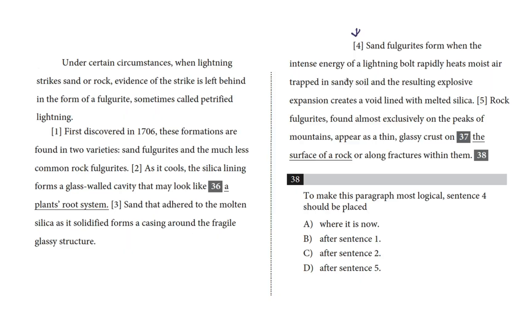Let me read the passage so we can get some context. And as we go, I'm going to circle pronouns and any kind of transition words or phrases. Under certain circumstances, when lightning strikes sand or rock, evidence of the strike is left behind in the form of a fulgurite, sometimes called petrified lightning.